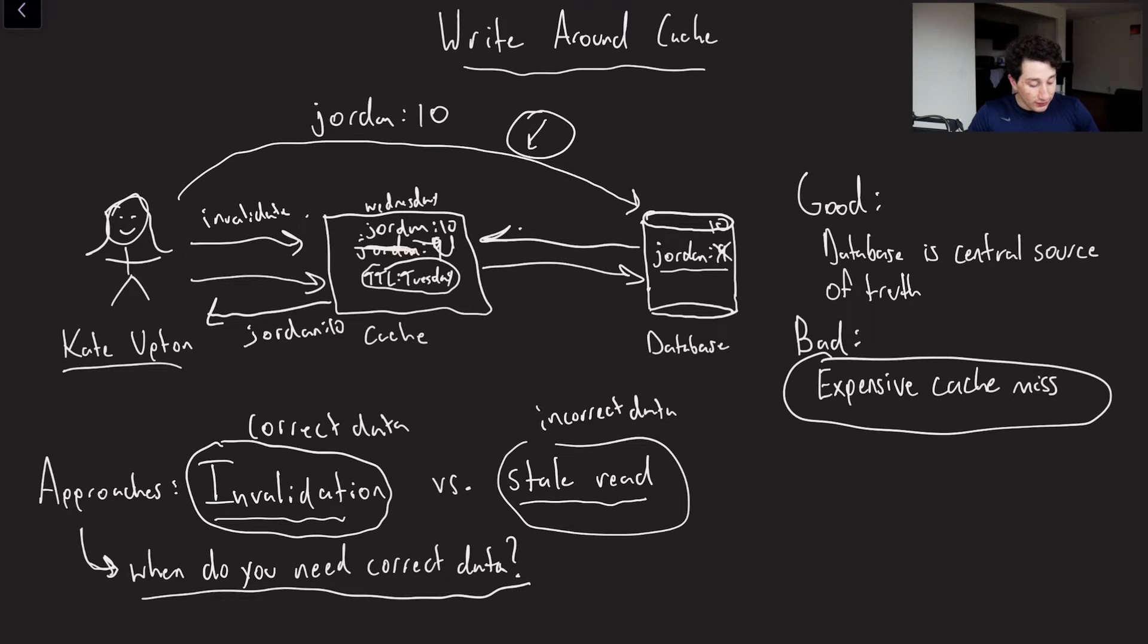But the thing to note here is that in both of these implementations, we have an expensive cache miss. We now have to basically route our networking call through our cache as a result of the fact that we made a new write and now the cache doesn't have the data.